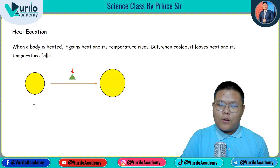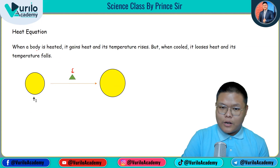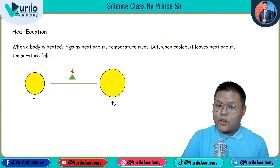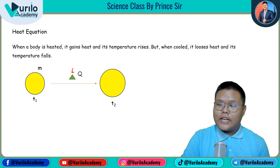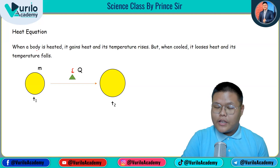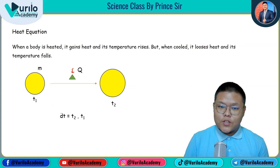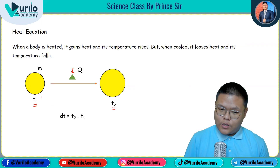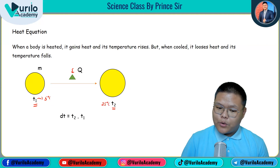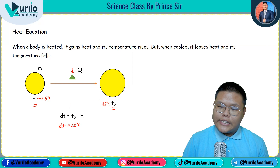When we provide heat, first the initial temperature of the body is T1. After receiving heat, the final temperature becomes T2. The mass of the body is m. The heat we provide is denoted as Q. Now the change in temperature: ΔT equals final minus initial temperature. For example, if T1 was 5°C and T2 is 25°C, then change in temperature ΔT = 25 − 5 = 20°C.